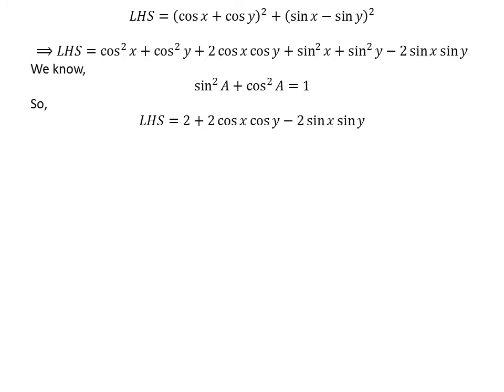Application of the above identity gives us the left-hand side of the equation is equal to 2 plus 2 times cosine of x times cosine of y minus 2 times sine of x times sine of y.